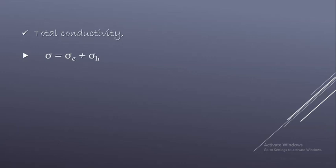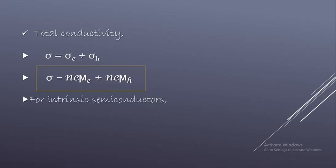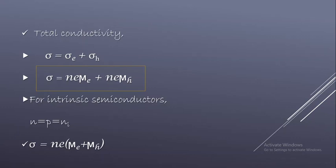Therefore, total conductivity sigma = sigma_e + sigma_h. Substituting the values, sigma = n·e·mu_e + p·e·mu_h. For an intrinsic semiconductor — a pure type — the number of electrons equals the number of holes, so n = p = ni (the intrinsic carrier concentration). Substituting back, sigma = ni·e·(mu_e + mu_h).